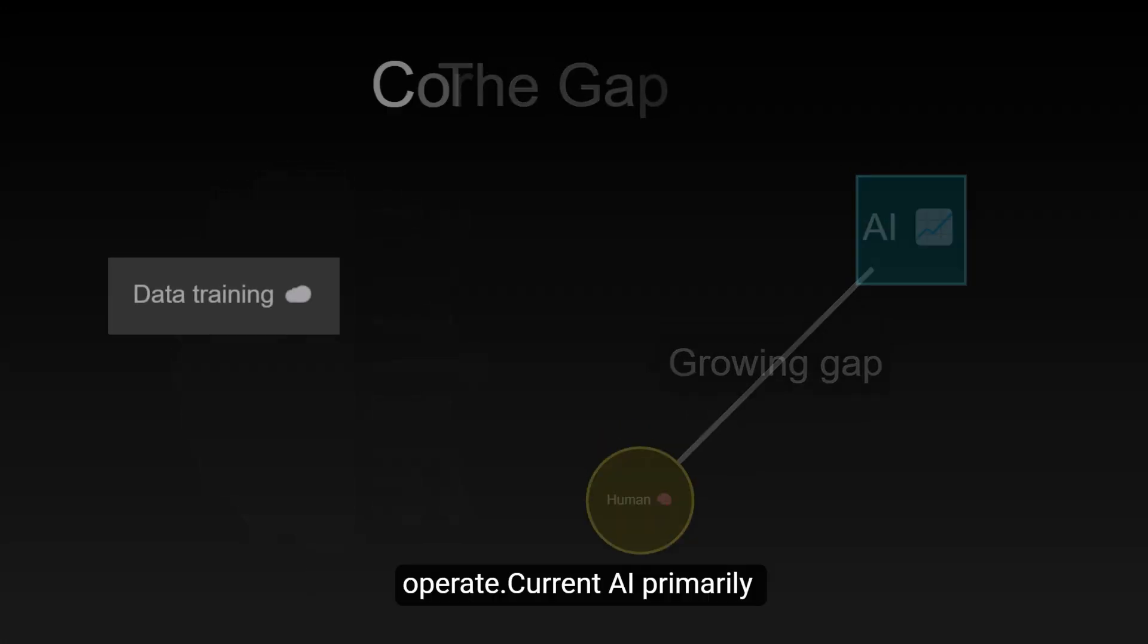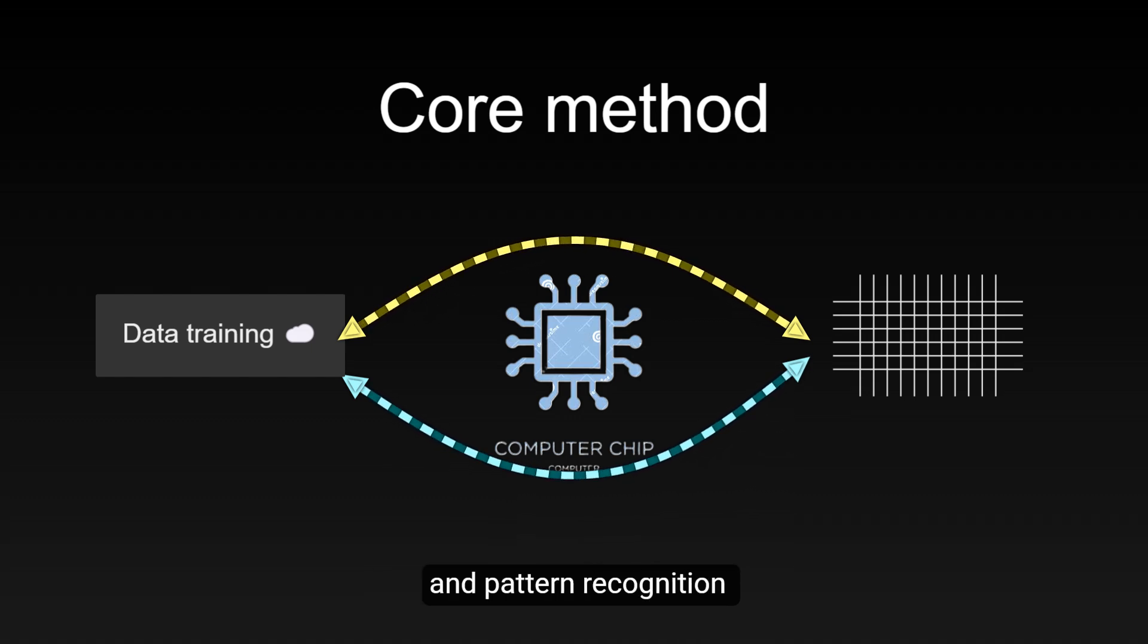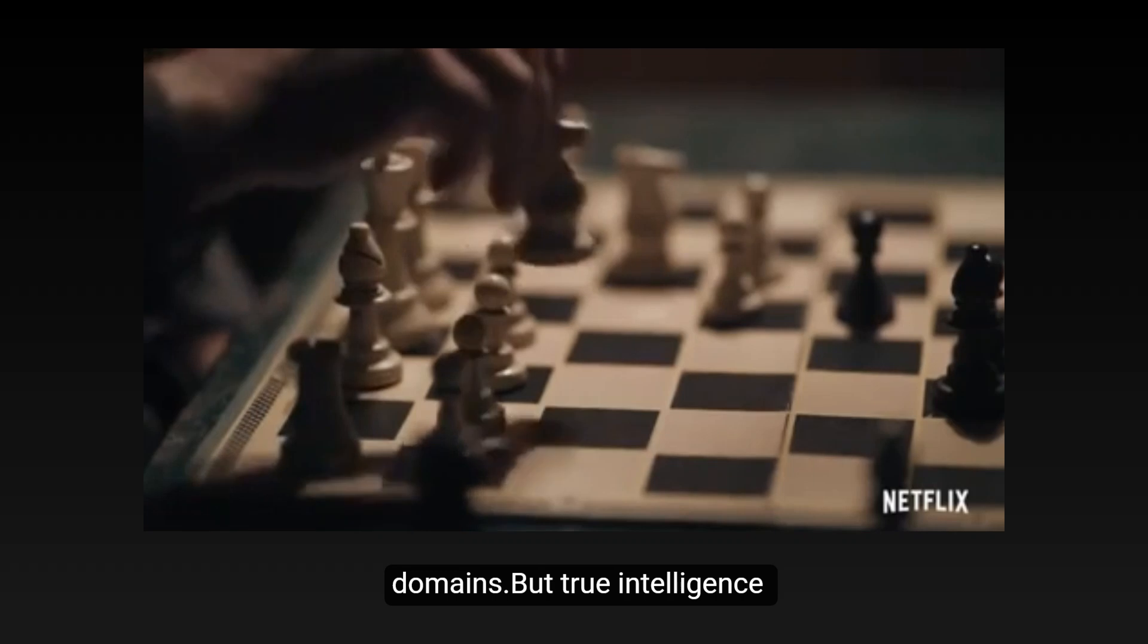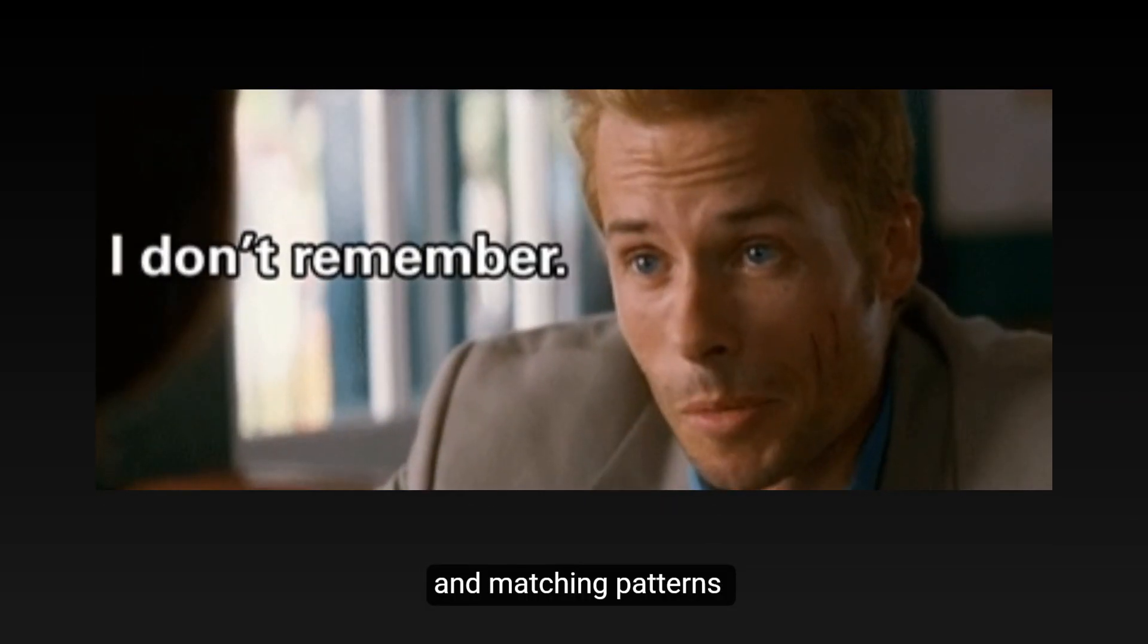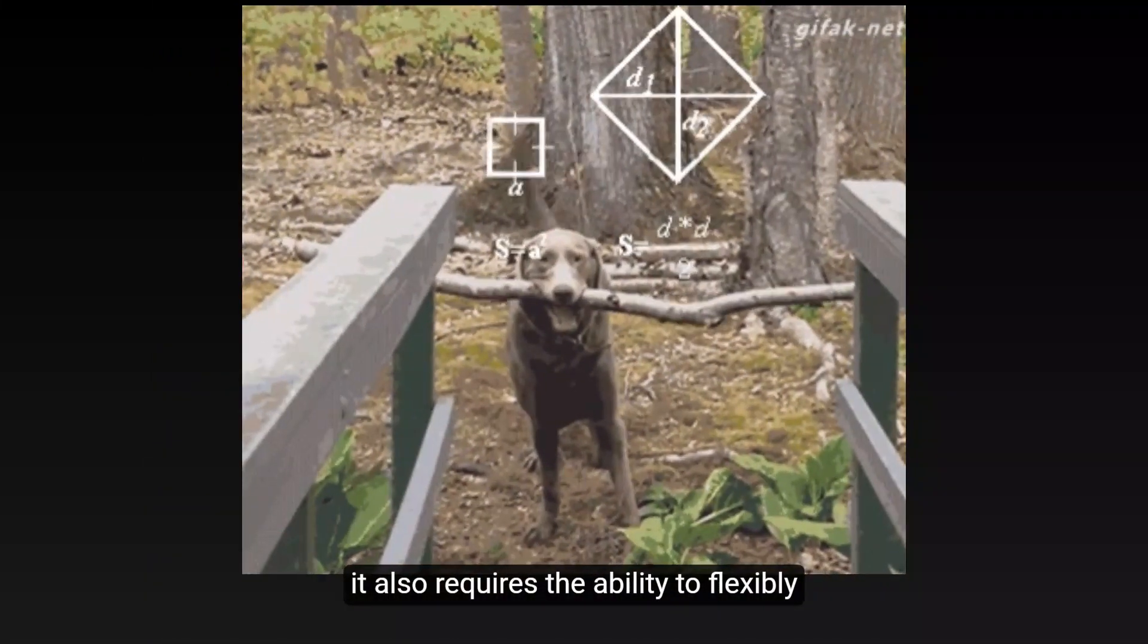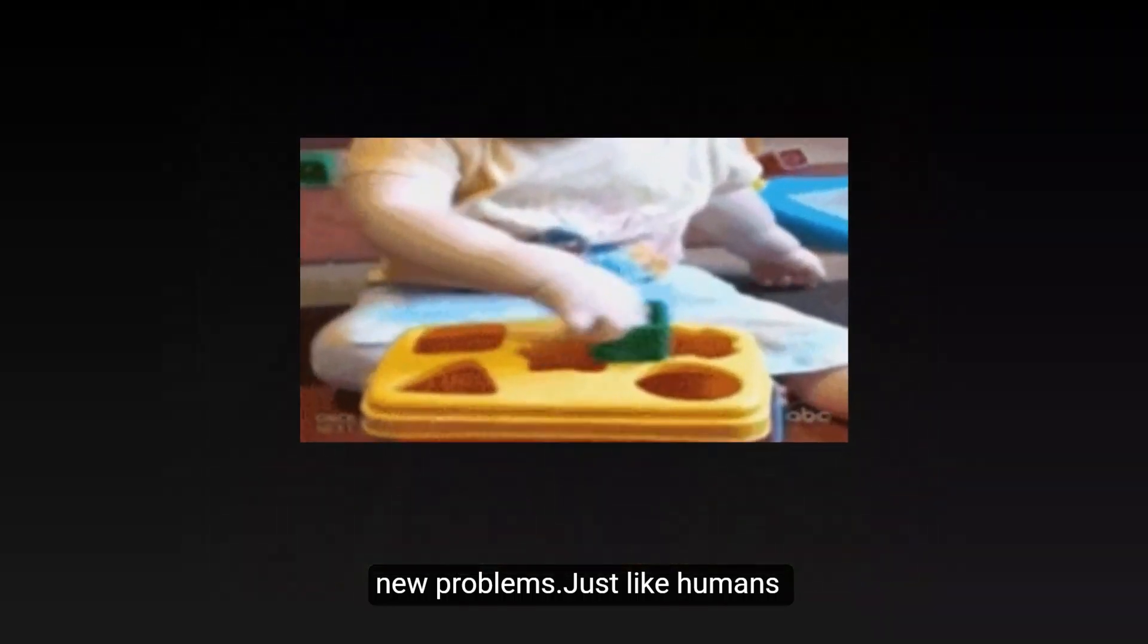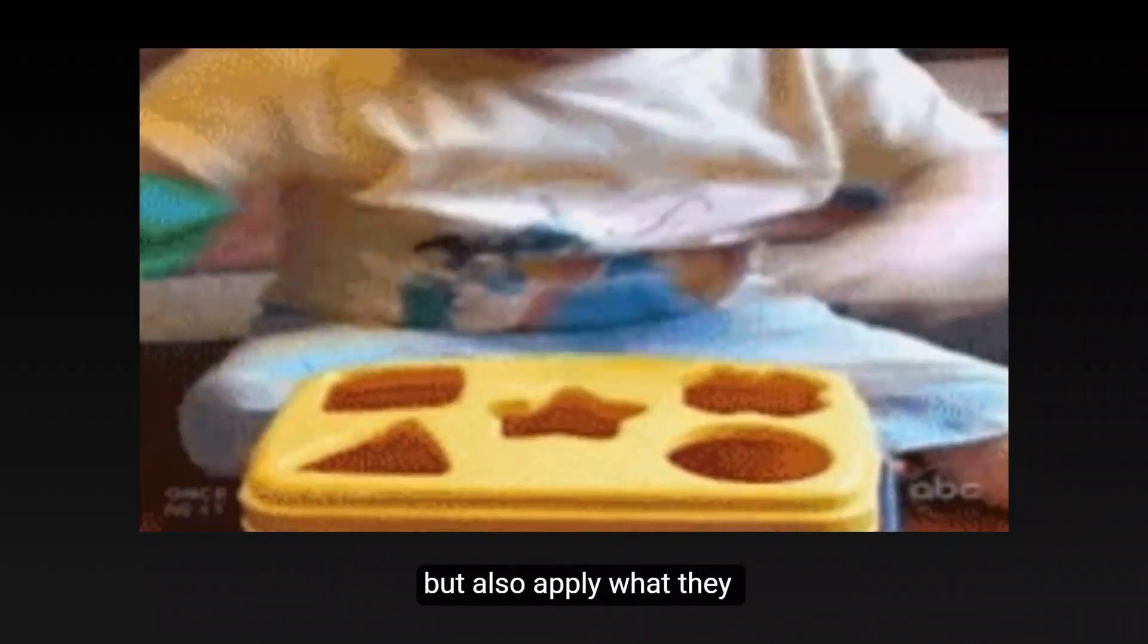This gap may stem from how AI systems operate. Current AI primarily relies on extensive data training and pattern recognition, which allows them to excel in specific domains. But true intelligence is not just about memorizing and matching patterns. It also requires the ability to flexibly apply knowledge to solve new problems. Just like humans, who can not only memorize knowledge, but also apply what they've learned to new scenarios.